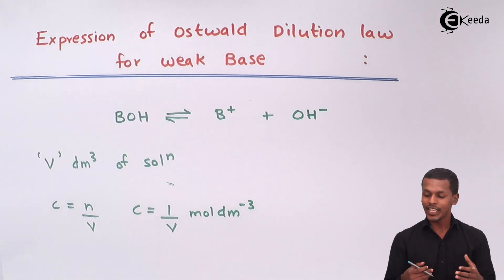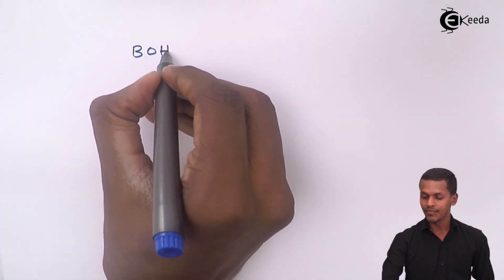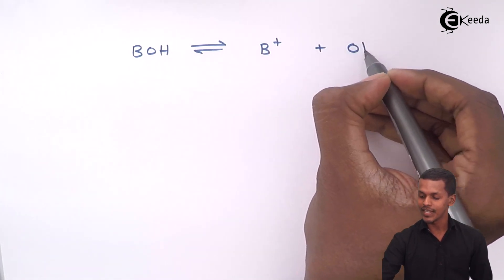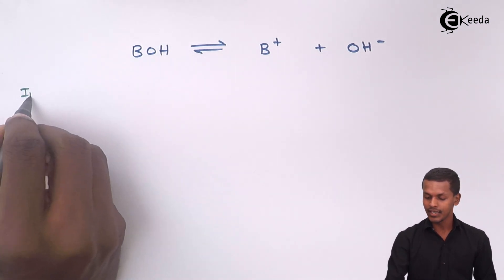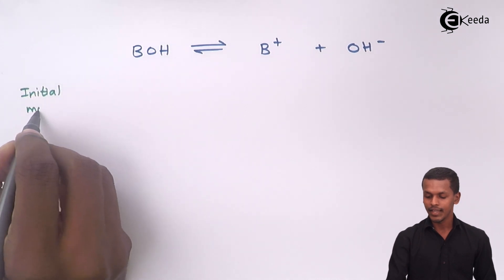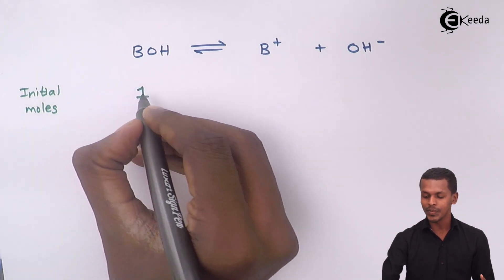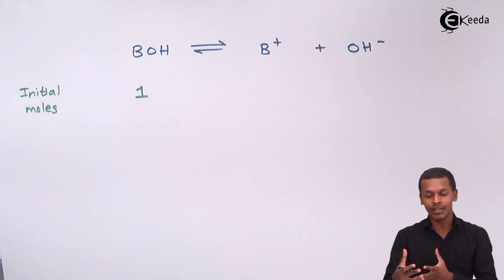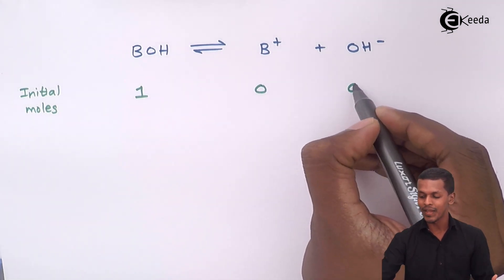Let us derive the expression for this weak base. We take one mole of B-OH, which undergoes dissociation to give B⁺ and OH⁻. Initially, before dissociation, we have only one mole of B-OH and no moles of B⁺ or OH⁻ produced.